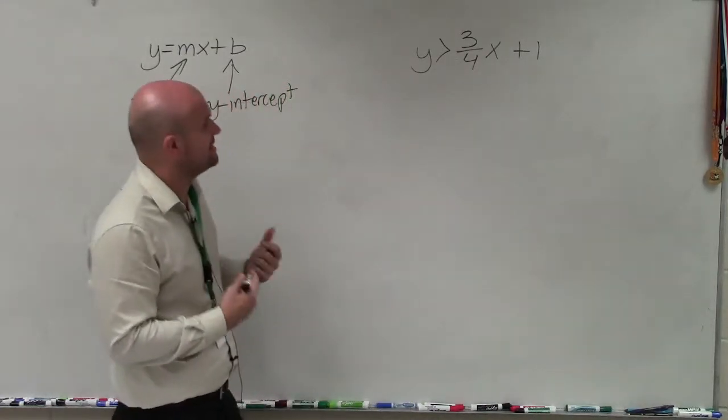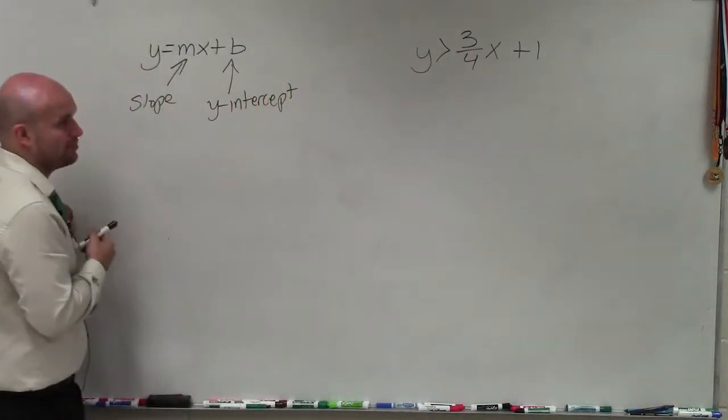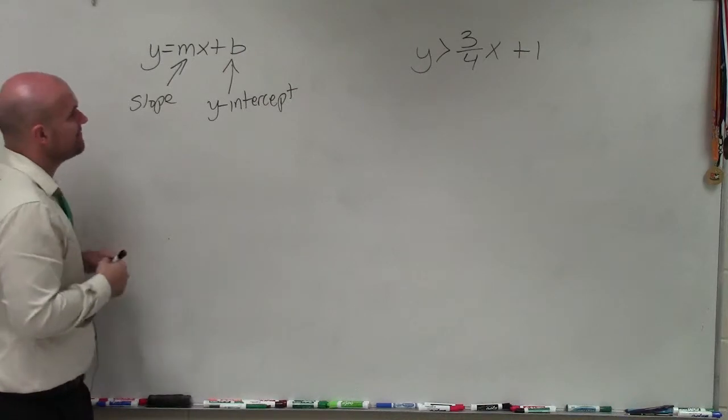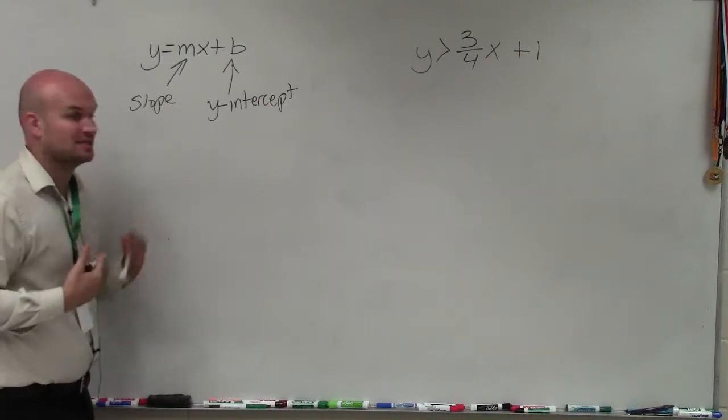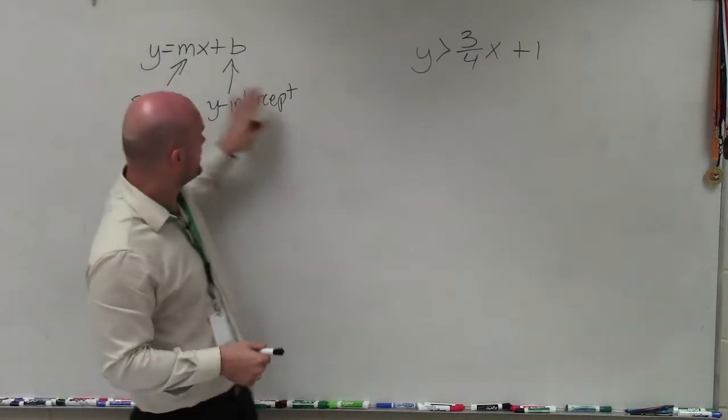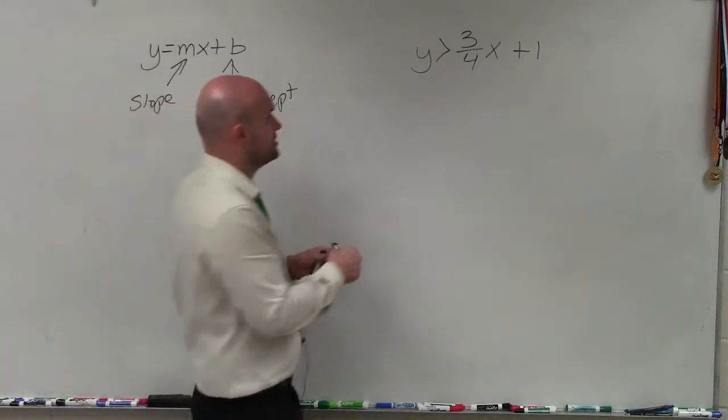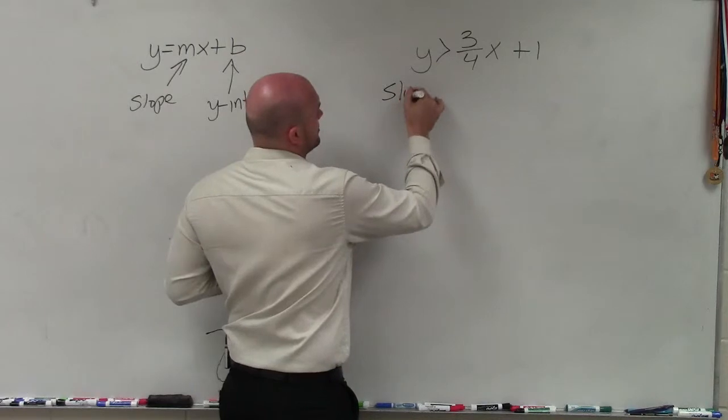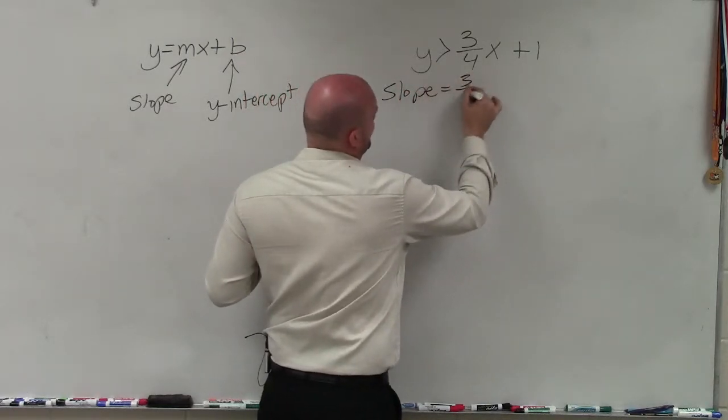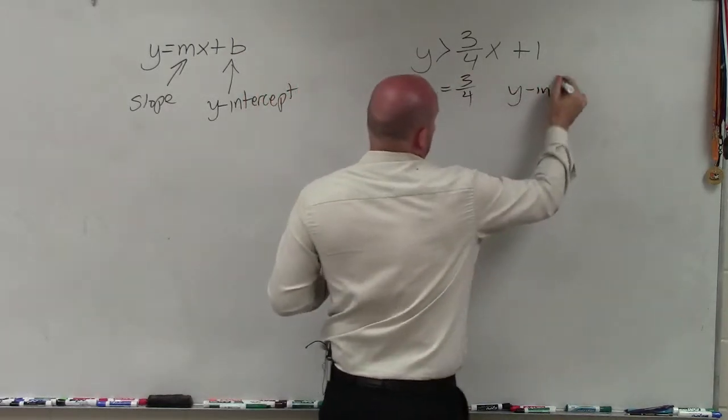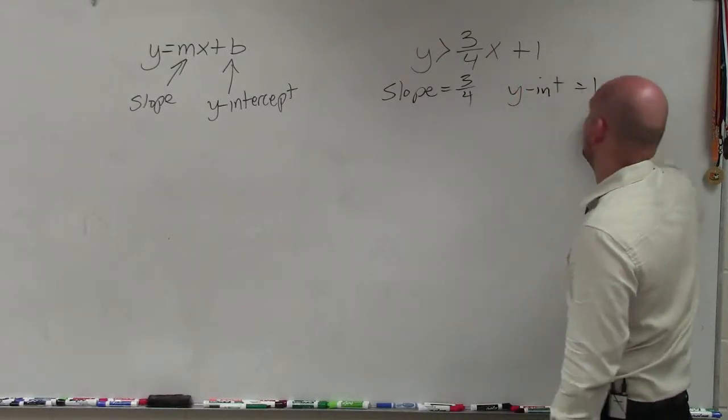To do that, what I'm needing to do is understand we can see it's already in slope-intercept form. So what I want to do is identify what exactly is my slope and what exactly is my y-intercept. Looking at slope-intercept form, you can see that slope represents the coefficient of the x, which in this case, we can say my slope is equal to 3/4, and my y-intercept is equal to my constant, which is equal to 1.